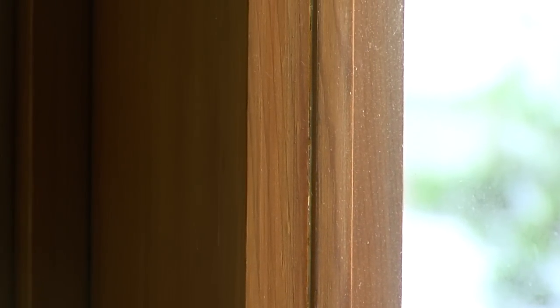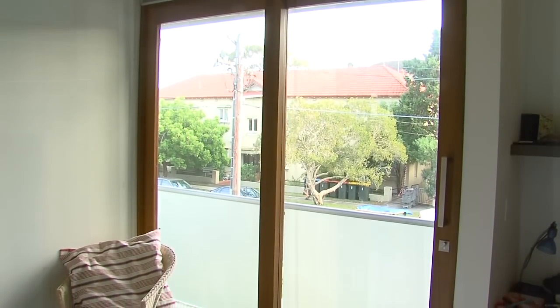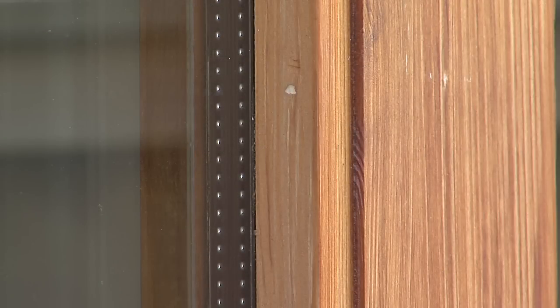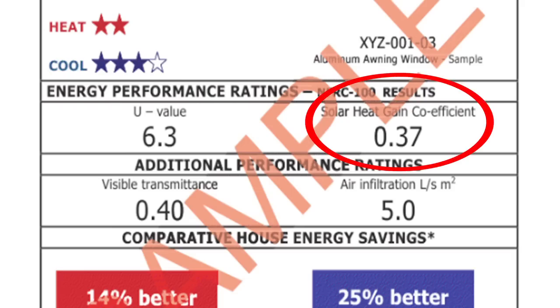Standard 3mm glazing has a U value of about 6, which allows up to 10 times more heat through than an insulated wall. This home uses double glazed windows with a U value of 3. Higher performance glazing such as low-E double glazing has even lower U values. Other measures on the label such as SHGC are also important, so do not base your decision on U value alone. See the previous video for information on this.